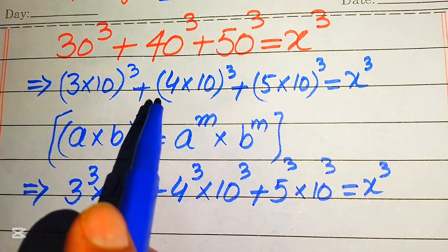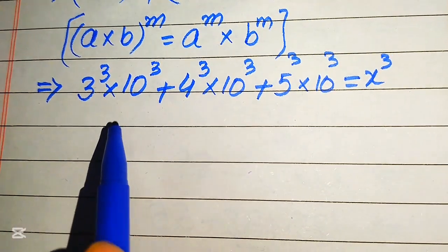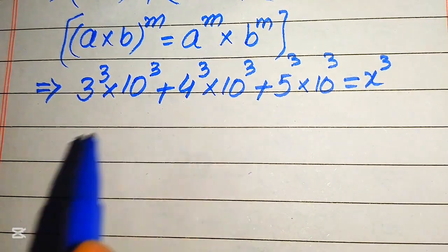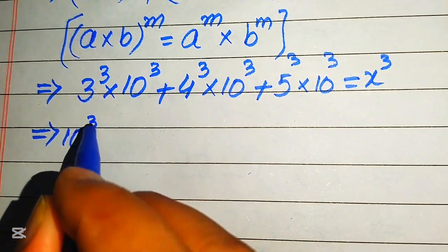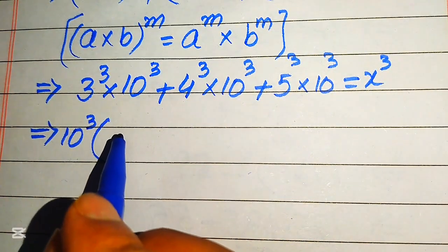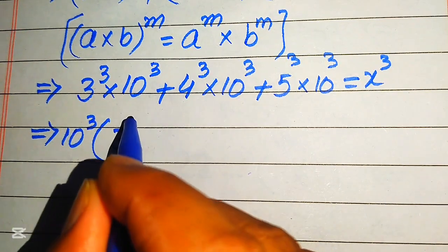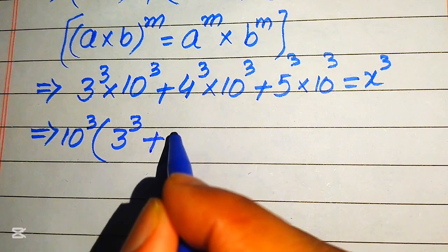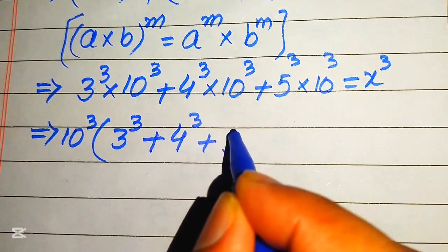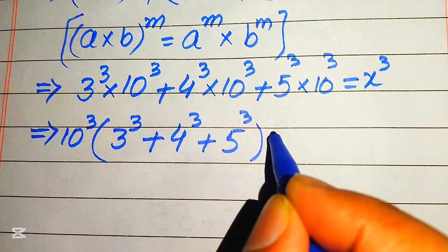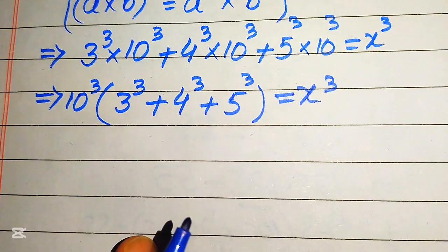Each of these terms involves 10 cubed, so we take 10 cubed as a common factor. The remaining values inside the bracket are 3 cubed plus 4 cubed plus 5 cubed, and this equals x cubed.